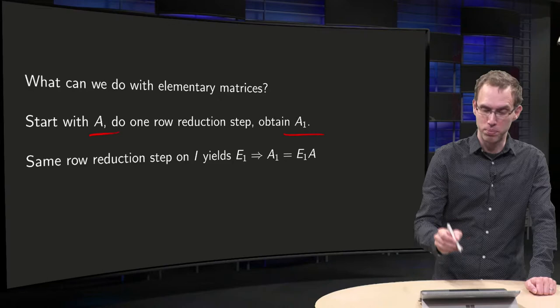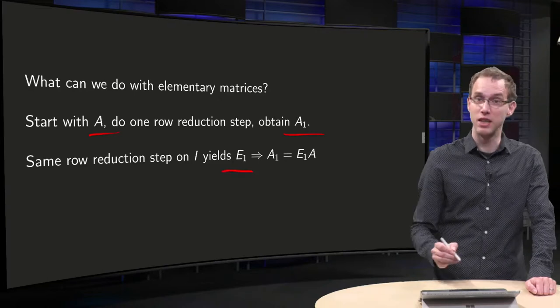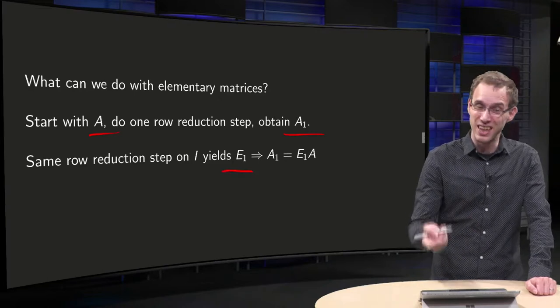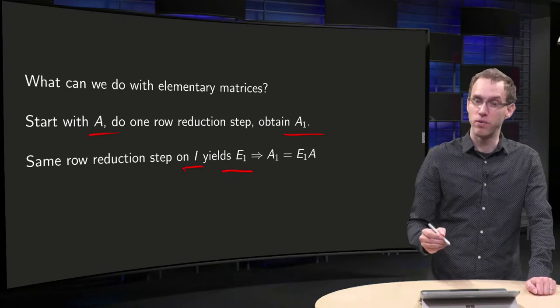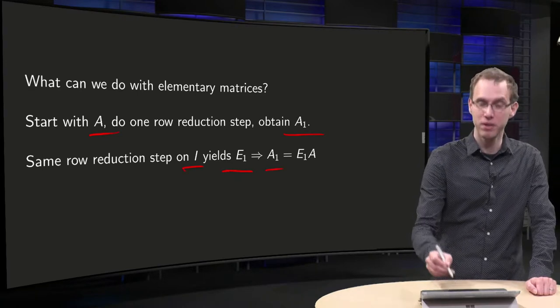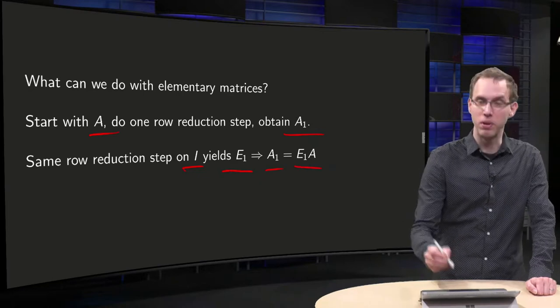Which one? We find the appropriate elementary matrix E1 by applying the same row reduction step on the identity matrix I. So we know that our matrix A1 equals E1 times A.